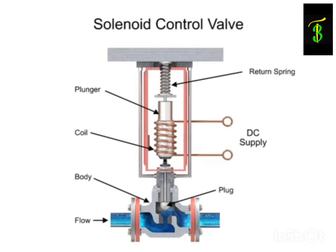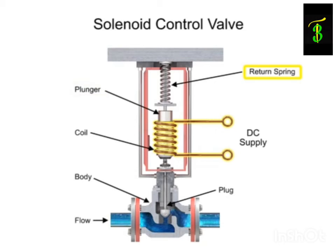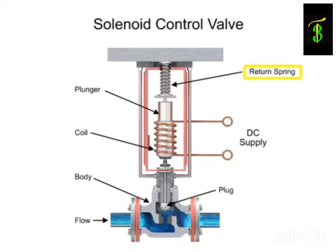For on-off control of the valve, a solenoid is used to actuate the valve to a fully closed or fully open position. Applying current to the coil generates a magnetic field that moves the plunger downward against the return spring. With zero current applied to the coil, the spring pulls the plunger upwards to the fully open position for a normally open state control valve.